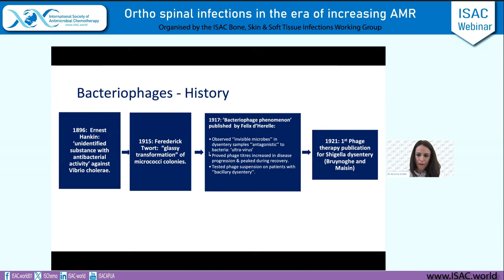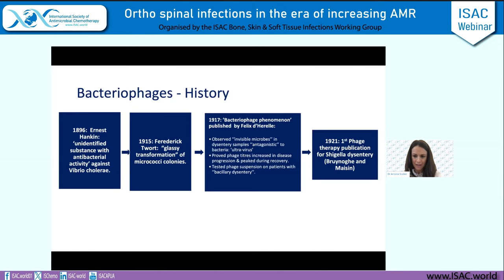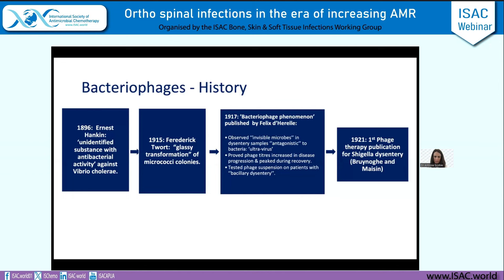The phenomenon of bacteriophages was actually first described by British microbiologists originally back in 1896, and then again 20 years later. Ernest Hankin observed an unidentified substance which had antibacterial activity in river samples from the Ganges and other rivers in India, with activity against Vibrio cholerae. Another British microbiologist described what he called a glassy transformation of micrococcus colonies, which we later came to understand as lysis.